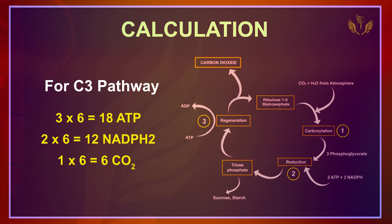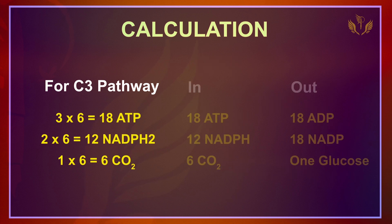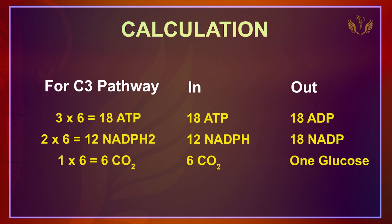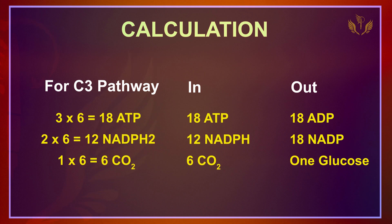There is a table in NCERT showing inputs and outputs. What goes in: 6 CO2, 18 ATP, and 12 NADPH. What comes out: 1 glucose, 18 ADP, and 12 NADP+. This is the ATP and NADPH calculation for the C3 pathway — remember this.